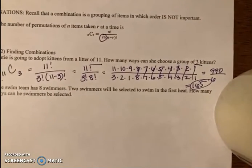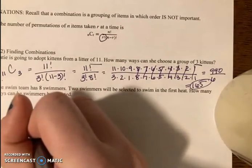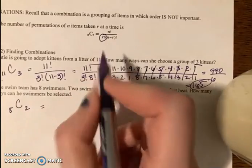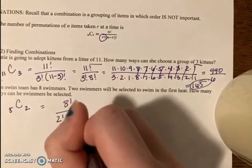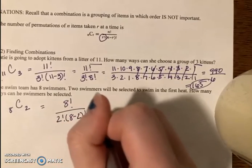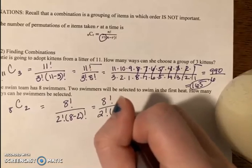Part B says the swim team has eight swimmers. Two swimmers will be selected to swim in the first heat. How many ways can the swimmers be selected? So it doesn't matter which order they're picked in. It just matters that two people are being selected. So that is a combination where n is 8 and 2 would be r. So if I plug it into that rule, that's n factorial over r factorial times n minus r factorial. So that's 8 factorial over 2 factorial times 6 factorial.